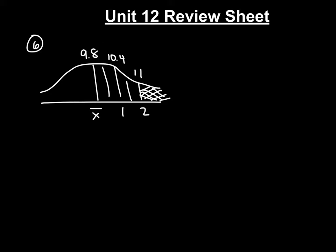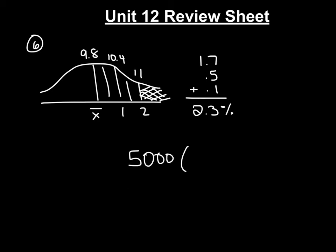If you go to your normal distribution curve and look at the percentages to the right of two standard deviations, there are really only three numbers: 1.7%, 0.5%, and 0.1%. If we add these together, it gives us 2.3%. So if we want to figure out how many of the 5,000 boxes weigh more, we take 5,000 and multiply it by 2.3%, which is 0.023, and when you multiply these you get 115 boxes.